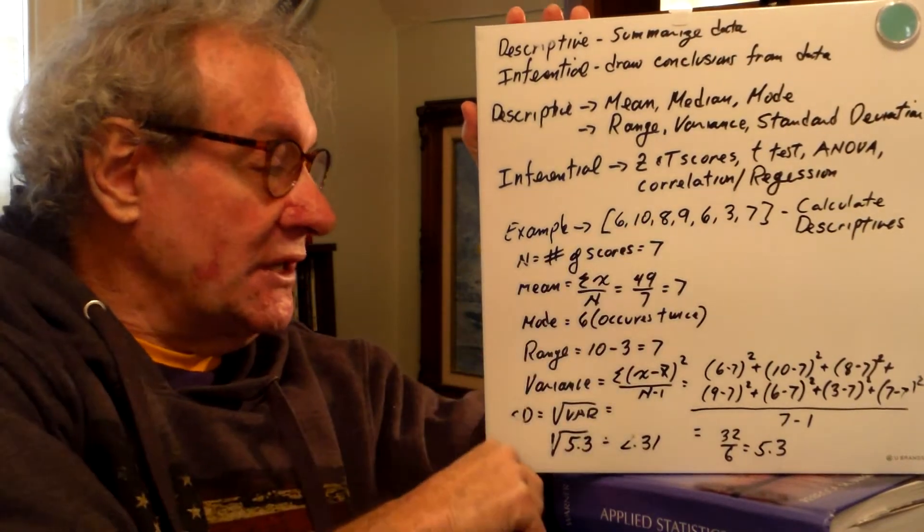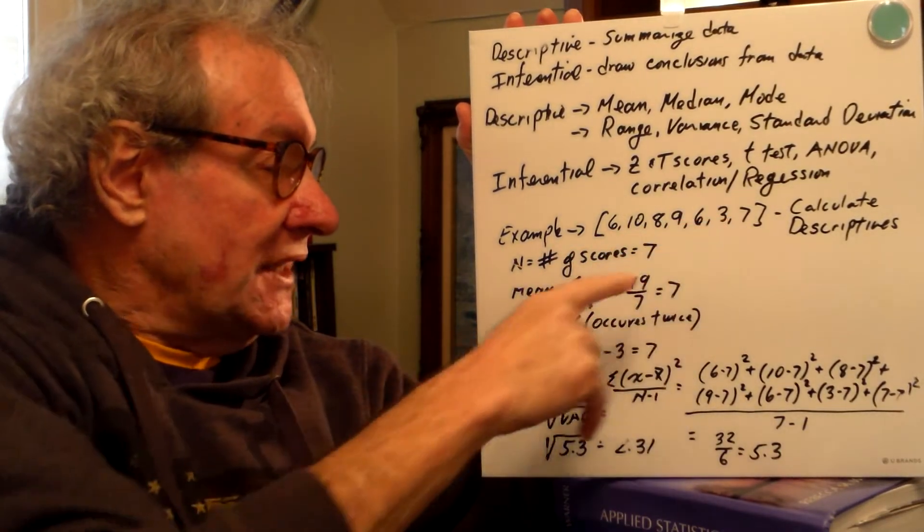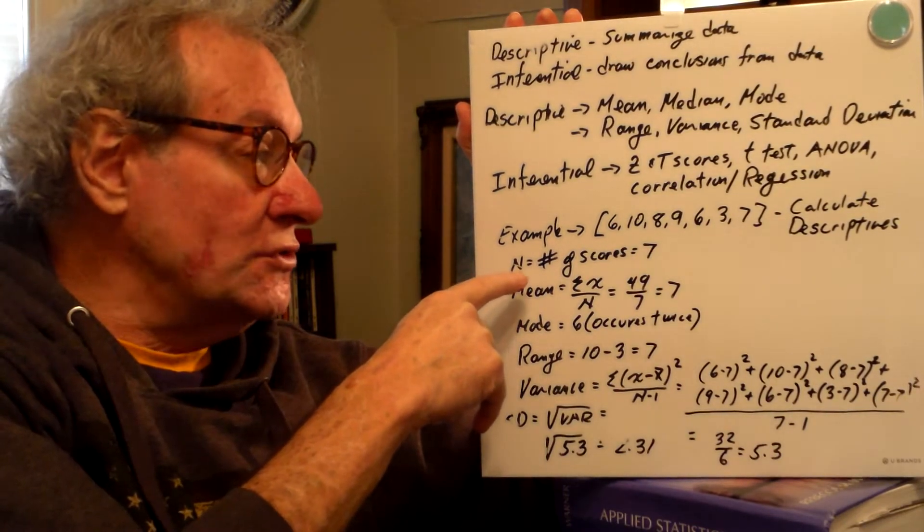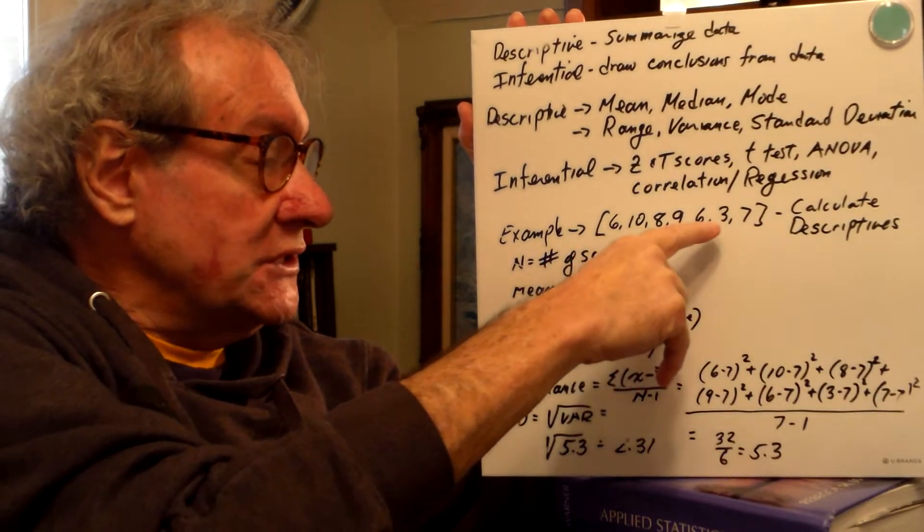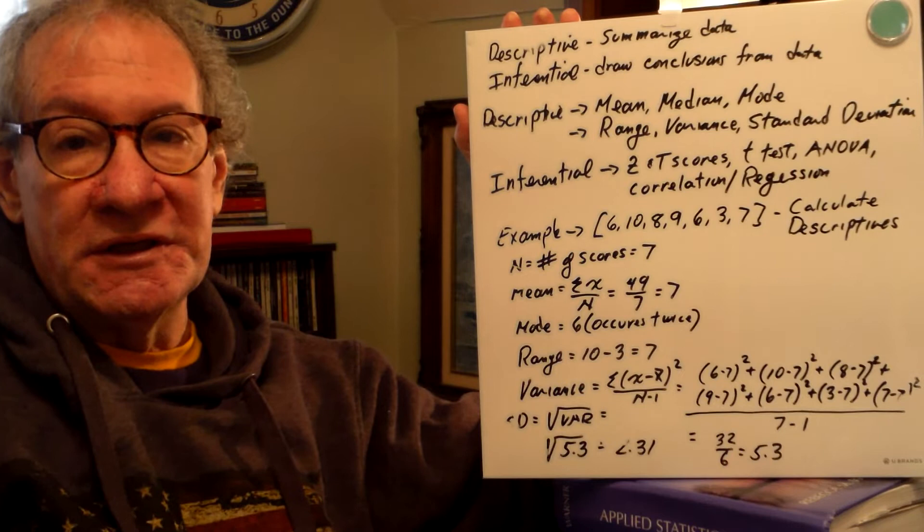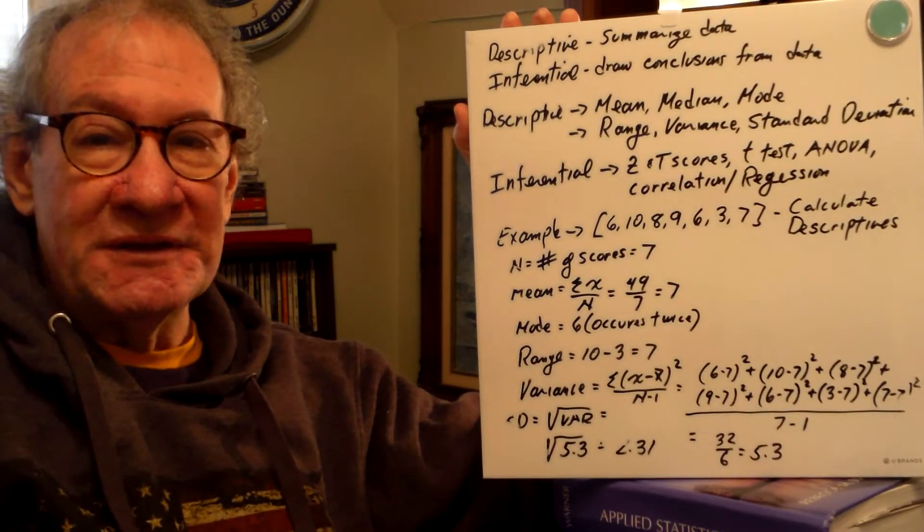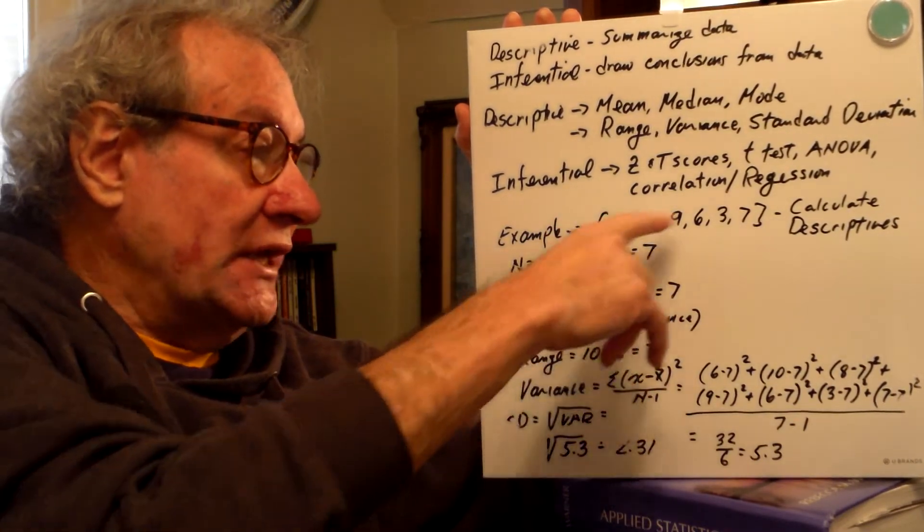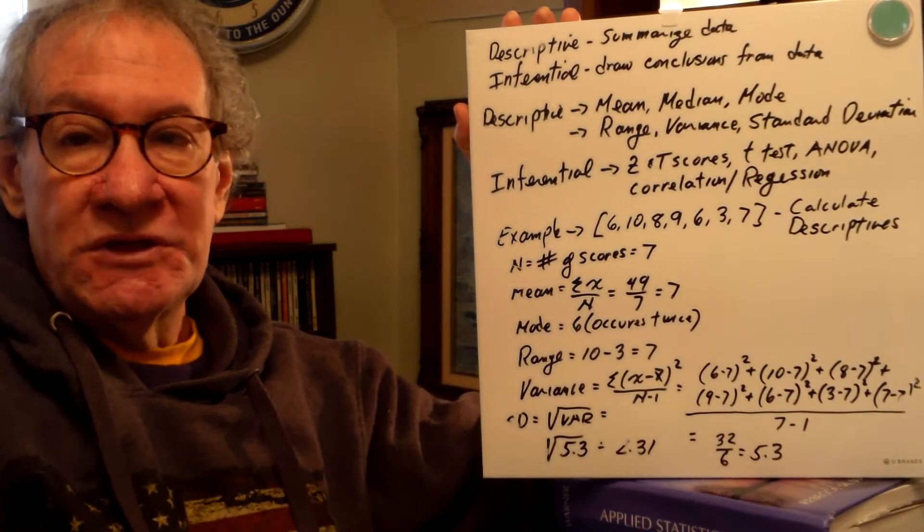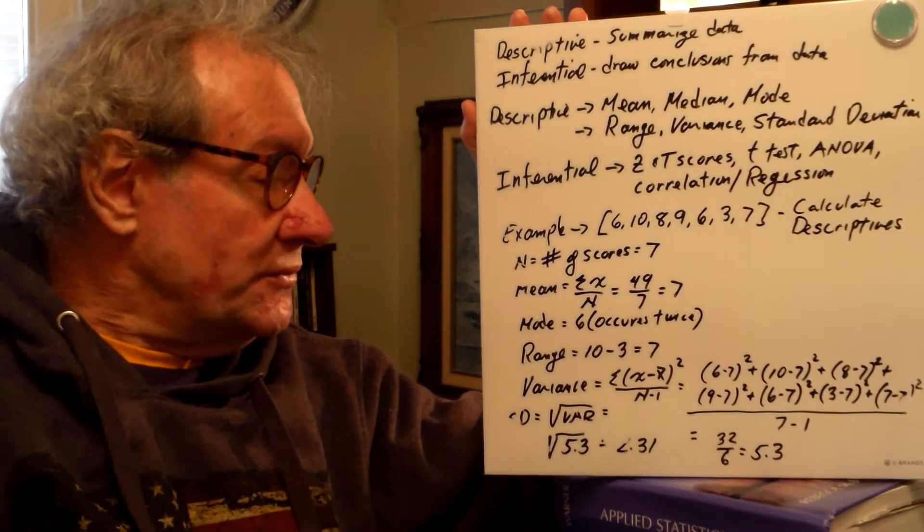So I've written a simple example here. I hope that you can see it from the board. But I've got seven numbers. And you can see here I've written the capital letter N. In statistics, the capital letter N stands for the number of scores. Six, ten, eight, nine, six, three, and seven. Now these scores can be fractions. These scores can be negative numbers. These scores can include zero. I've just used some simple scores so we can do some hand calculations with them. But there's nothing special about these numbers. You could look at it as you've got a small class of seven people who have taken a 10-point quiz, and this is how they did. So we want to not make inferences yet, but we want to describe what the data looks like.